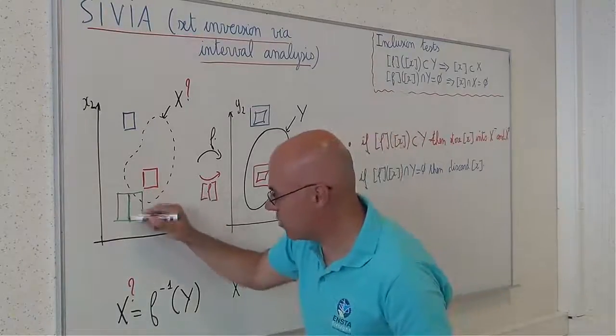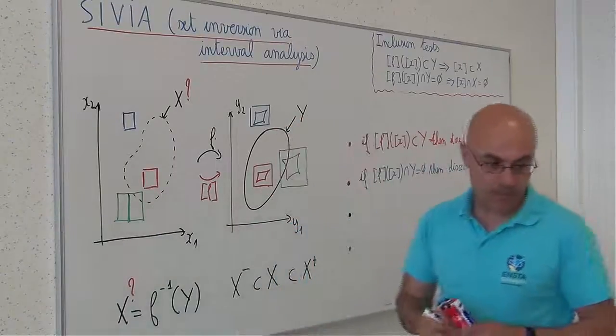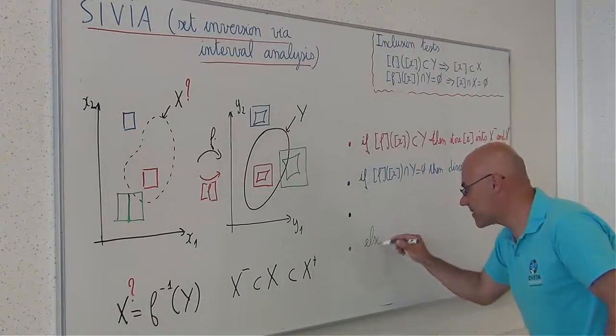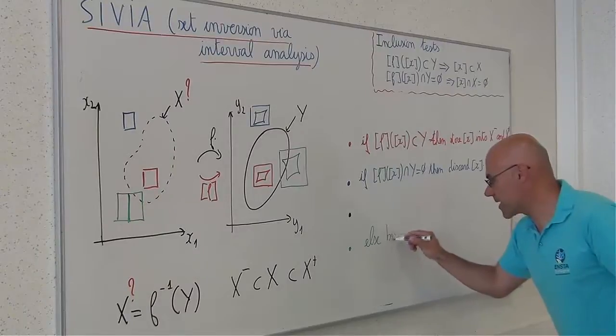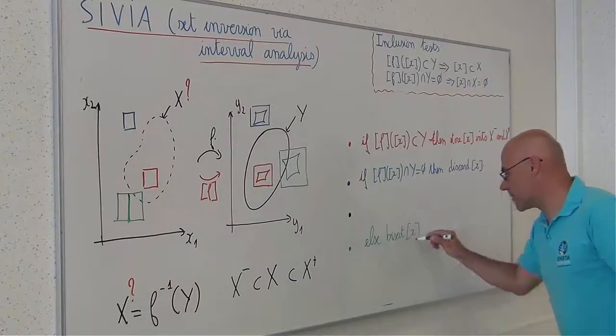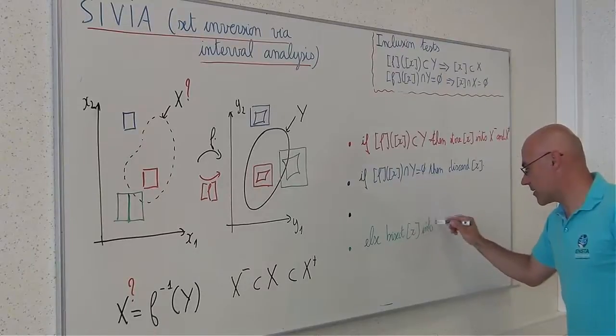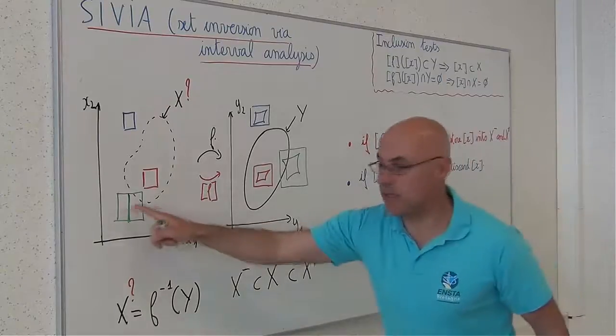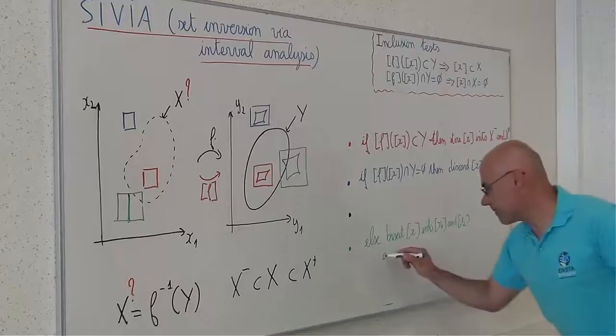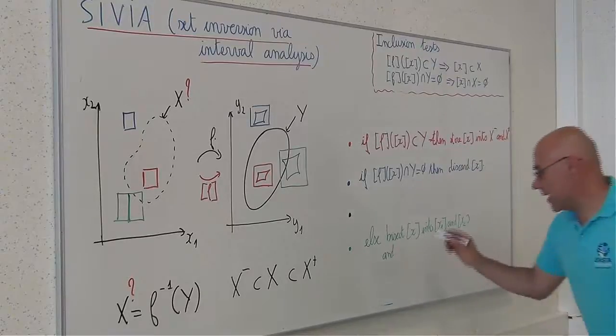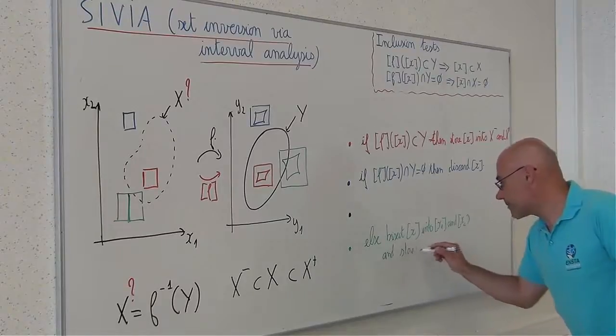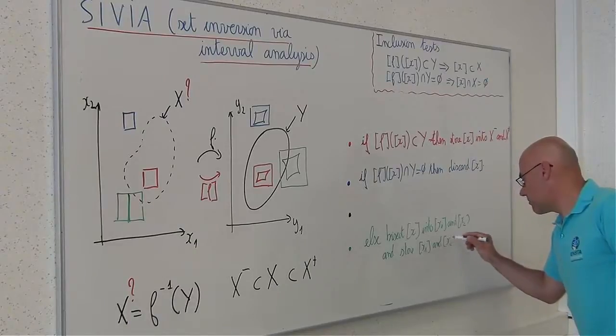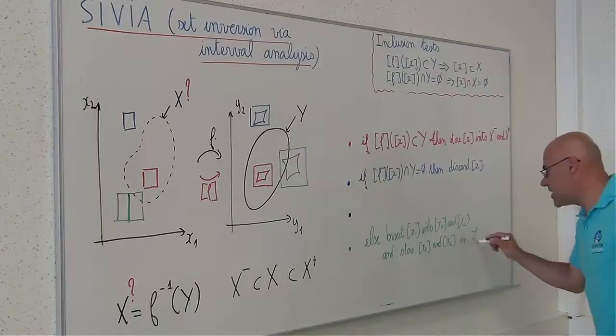x1 and x2. This is x1 and x2. And I will store x1 and x2 inside a list of boxes.